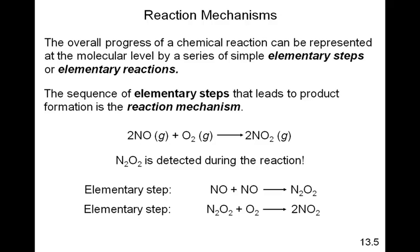Think about it like this: if you were doing a job and you had to do it in multiple steps, if one of those steps in the job were slower than the rest, it would slow down the whole process. The same idea — if one of the elementary steps has a slower rate than the others, it's the one that determines how fast the reaction can go.